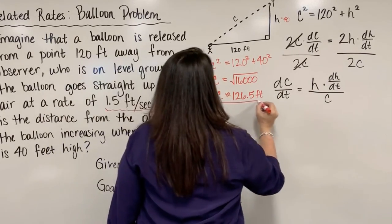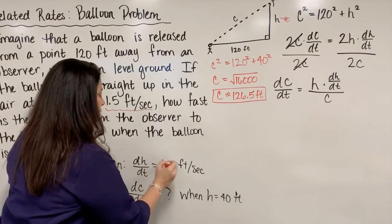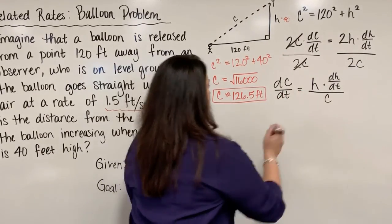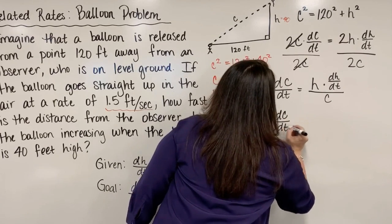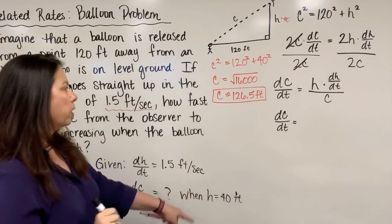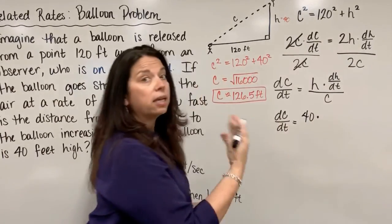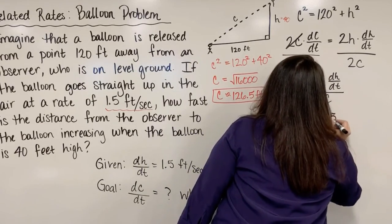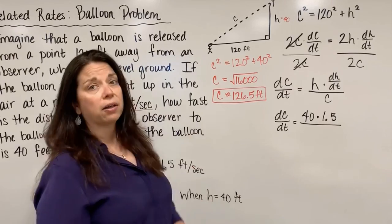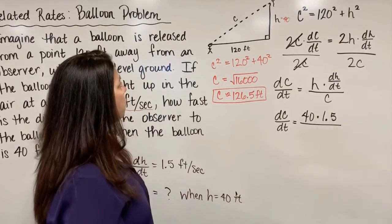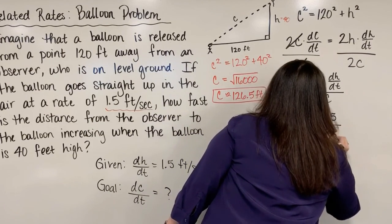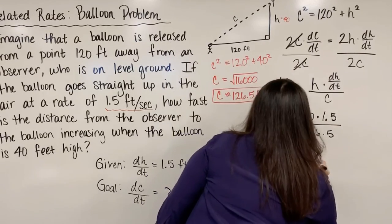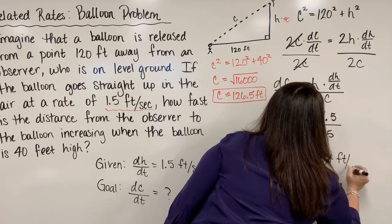We now have a value for c, and we know what the dH/dt value is and what h is. We have all the pieces we need to finish. So dC/dt is equal to h, which is 40, multiplied by the rate at which h is changing with respect to time, 1.5 feet per second, divided by the c value, 126.5. And when I calculate here, I get approximately 0.474 feet per second.